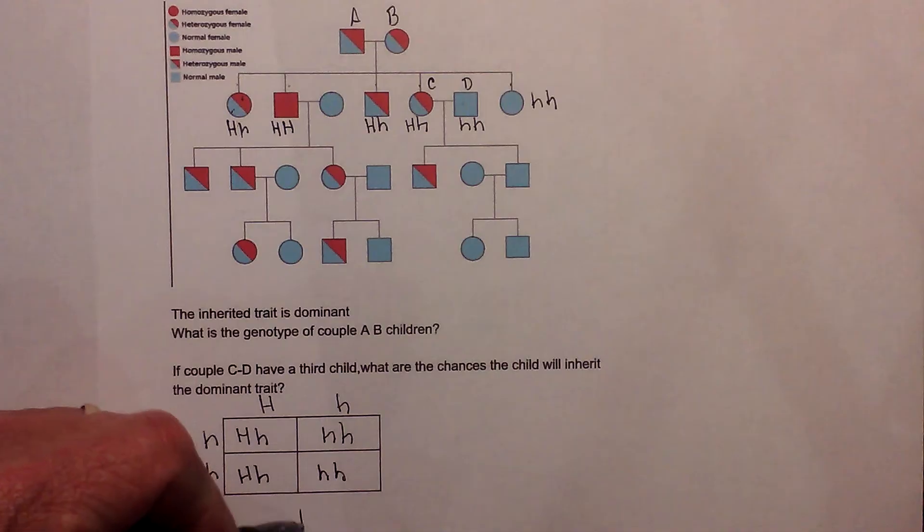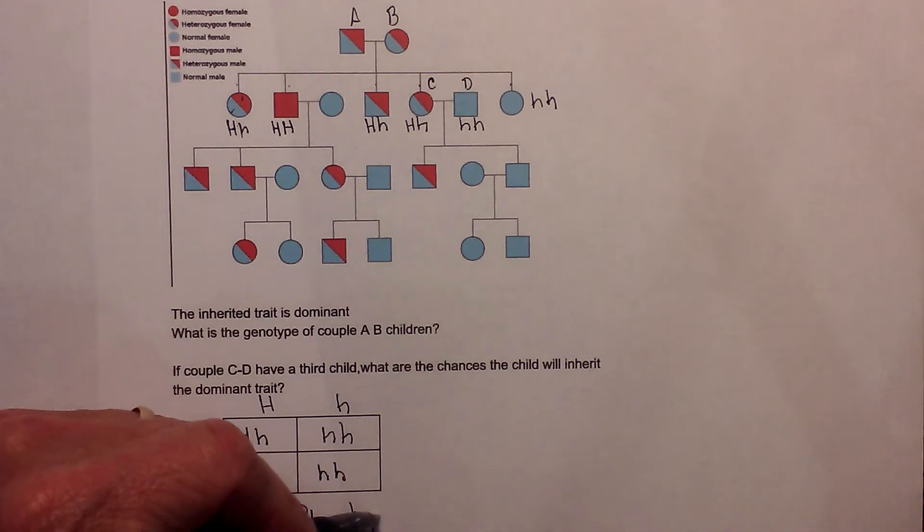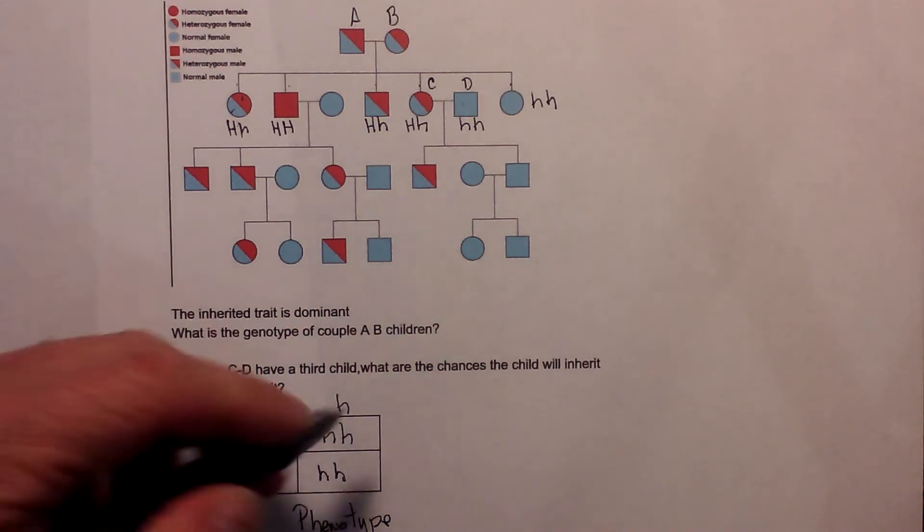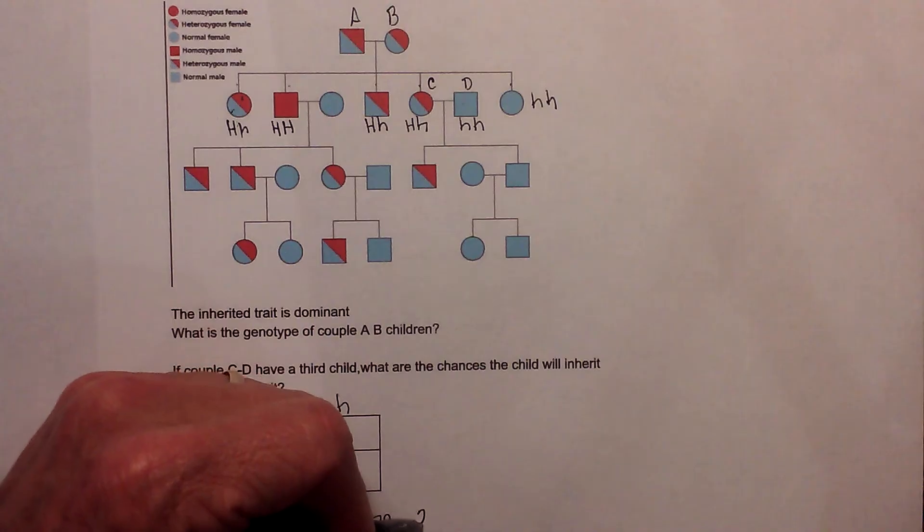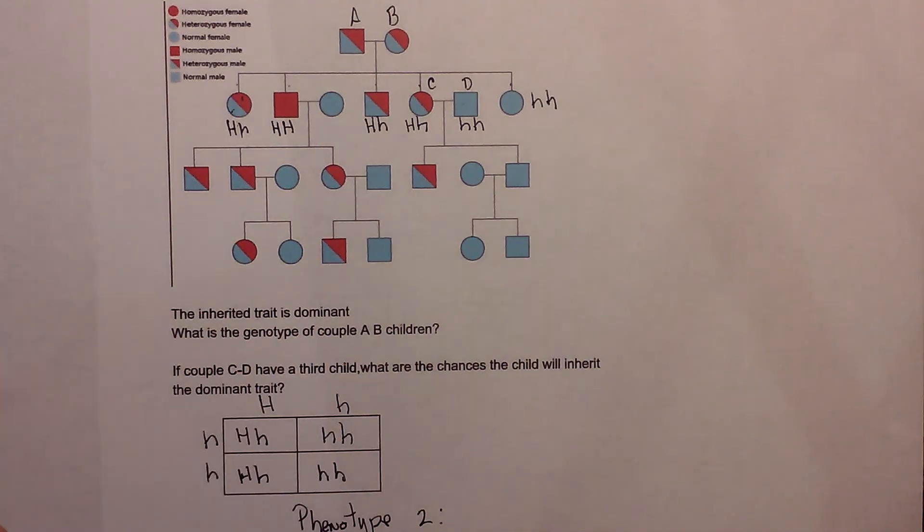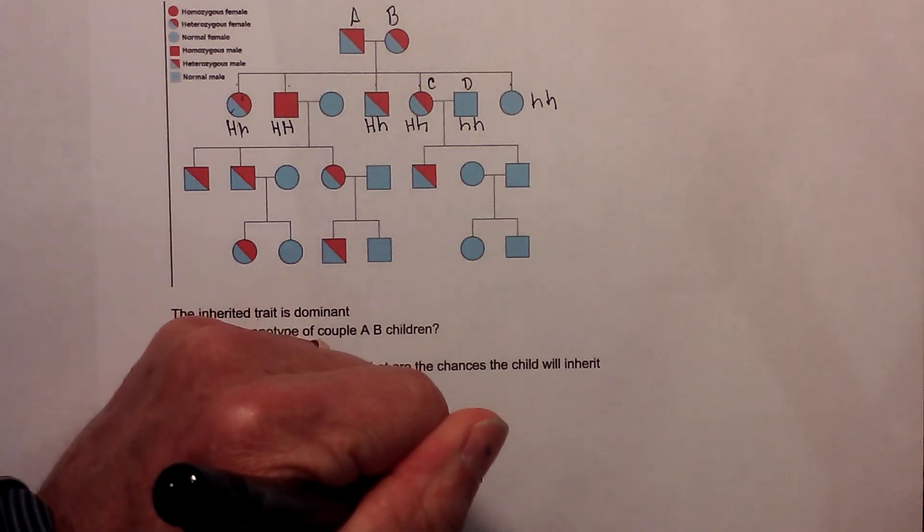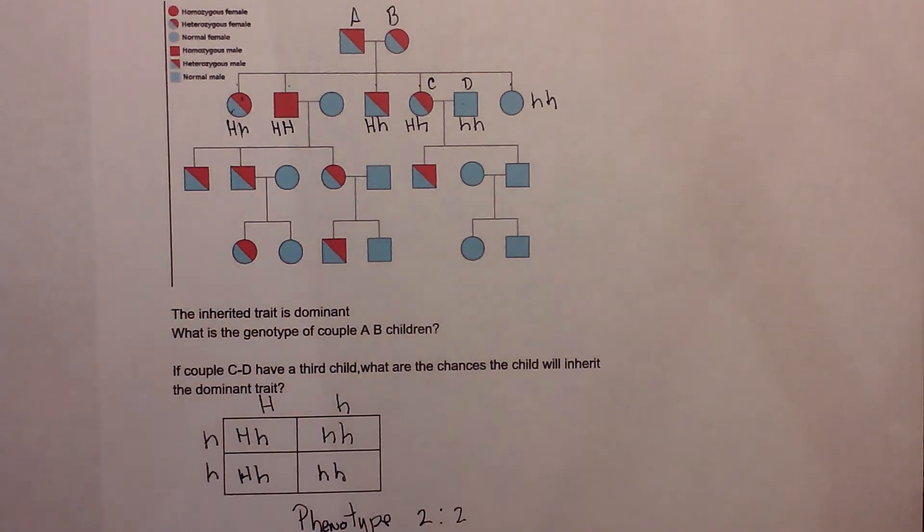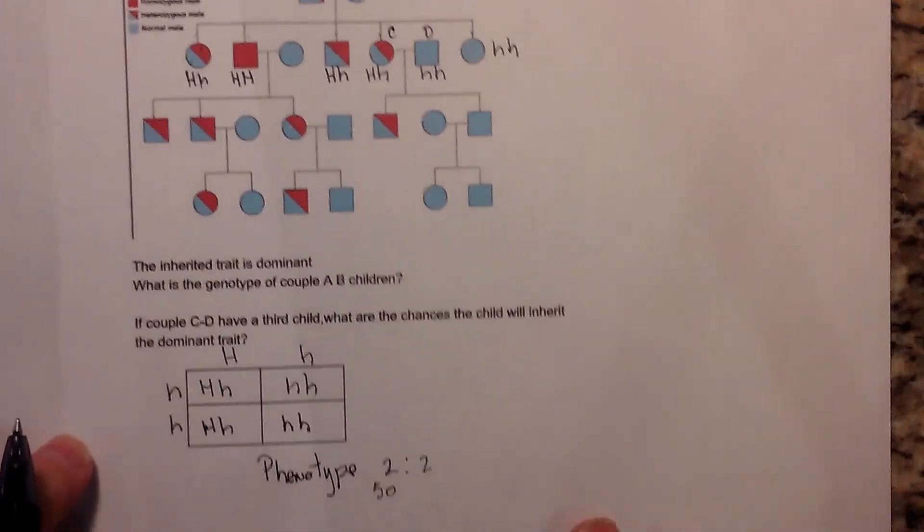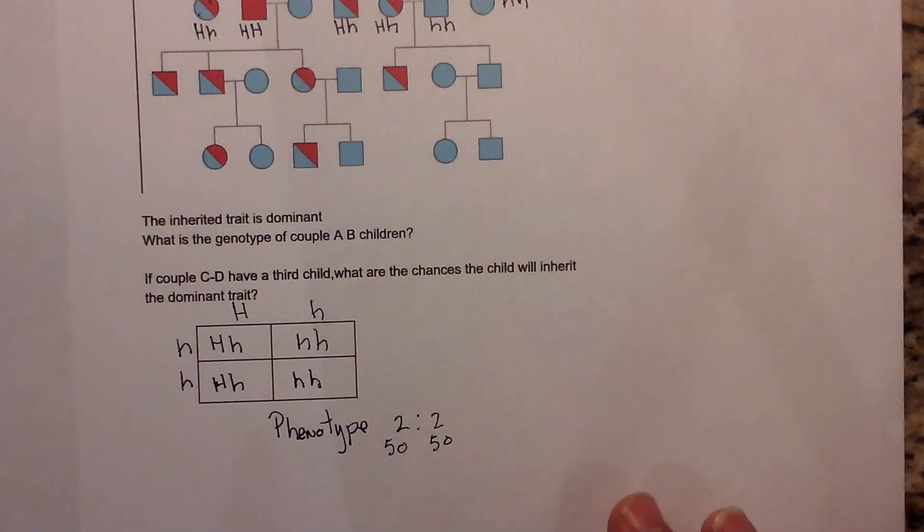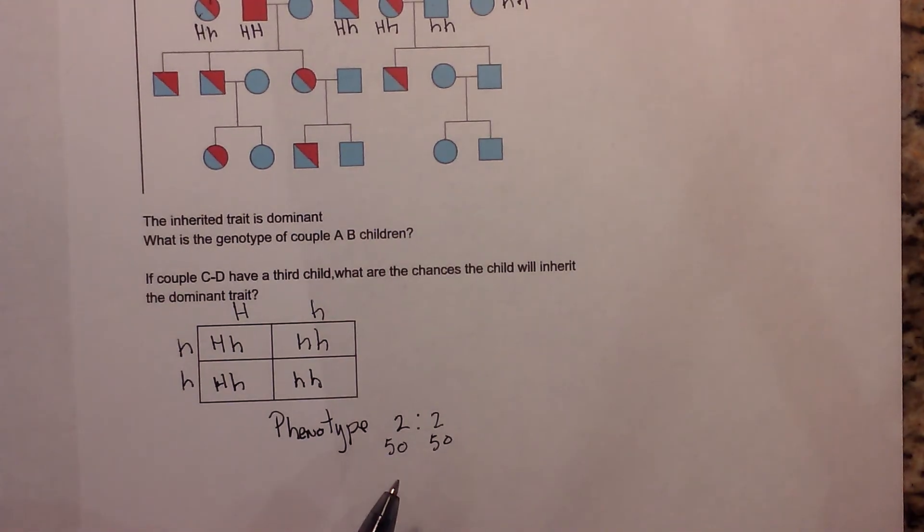Okay, and then let's go ahead and look and see what the phenotypes are going to be. And remember the phenotype, you either have dominant or recessive. So you're going to be dominant dominant. So that is two that will inherit the dominant disease, and then two that are recessive. So you will have a 50-50 chance that they may inherit this dominant disease.